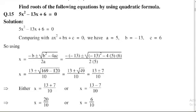Either x = (13 + 7) / 10, 13 + 7 = 20 divided by 10, 2 times 10, so x = 2, first root.